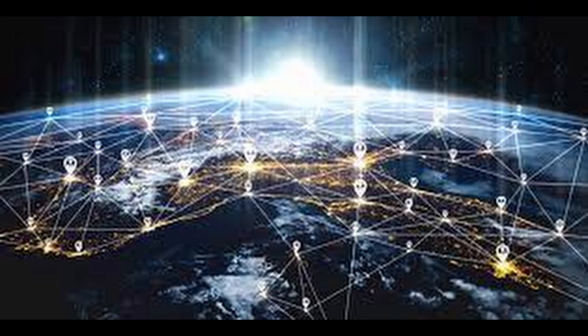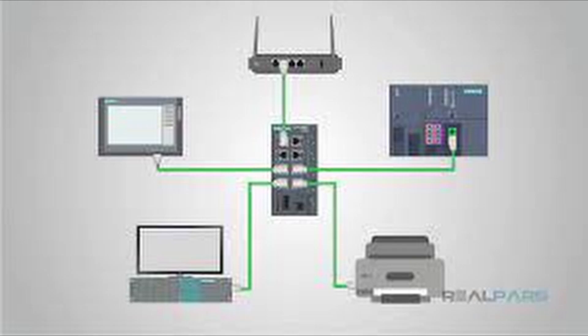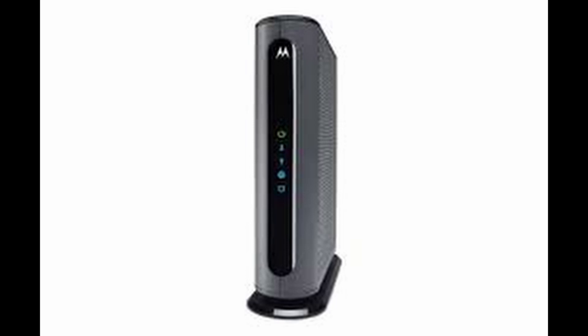The main difference between the internet and the Ethernet is that the internet connects computers all around the world and covers large areas, while the Ethernet is a small network of computers that can then be connected to the internet by a modem.